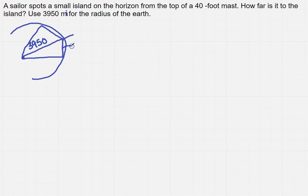The height of the mast is 40 feet. We know that's a right triangle, and the one over here is a right triangle. So what I need to know is how far away is my island? That means we're going to have to find the arc length. If I need to find out how far away an island is, I'm going to have to get an arc length.